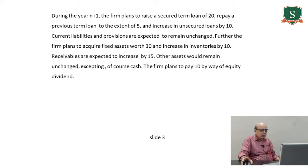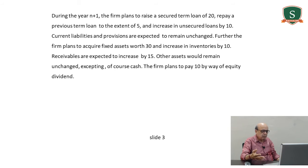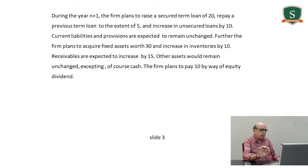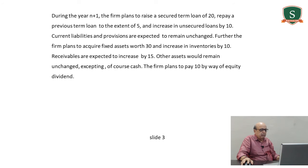The firm plans to raise a secured term loan of 20 and repay a previous term loan to the extent of 5. So 20 is cash inflow and 5 is cash outflow — net in hand is 15. There is an increase in unsecured loan by 10, which is cash inflow. Current liabilities and provisions are expected to remain unchanged — no change in either.